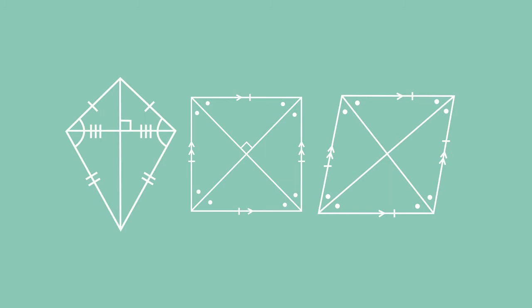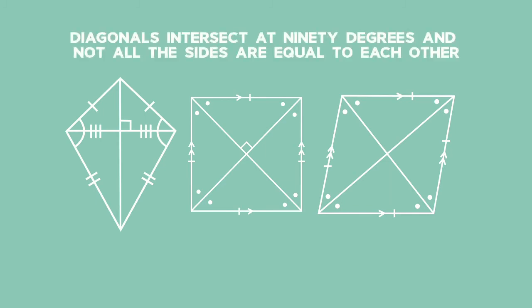So, if Nola is looking for a shape where the diagonals intersect at 90 degrees and not all sides are equal to each other, then obviously she must be thinking about a kite.